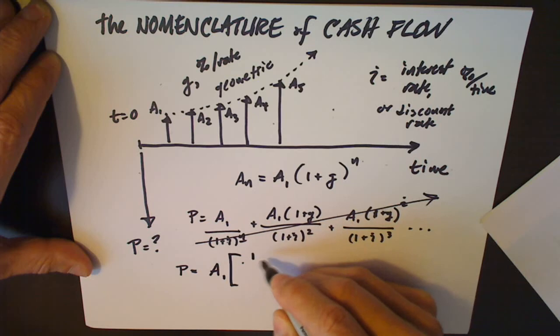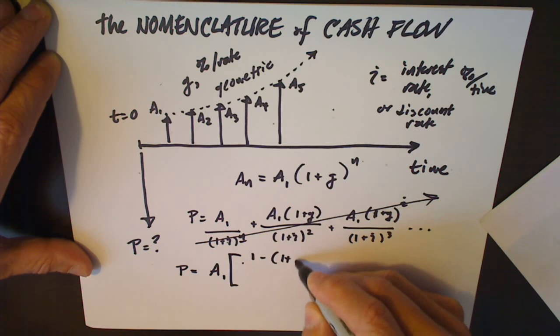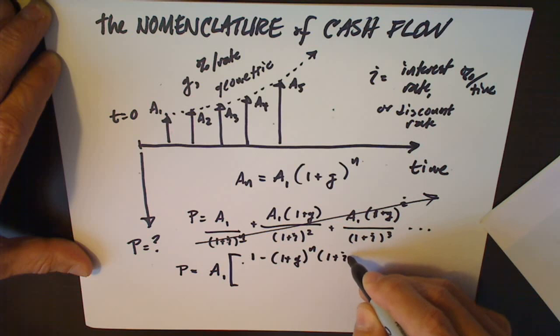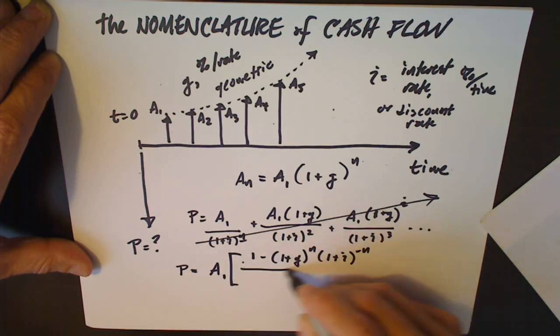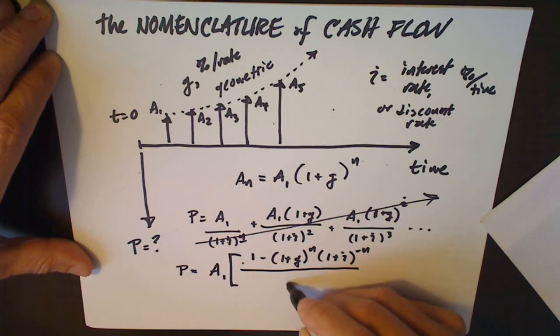A1 times the present worth factor: 1 minus the quantity 1 plus g to the n times 1 plus i to the negative n, all over i minus g.